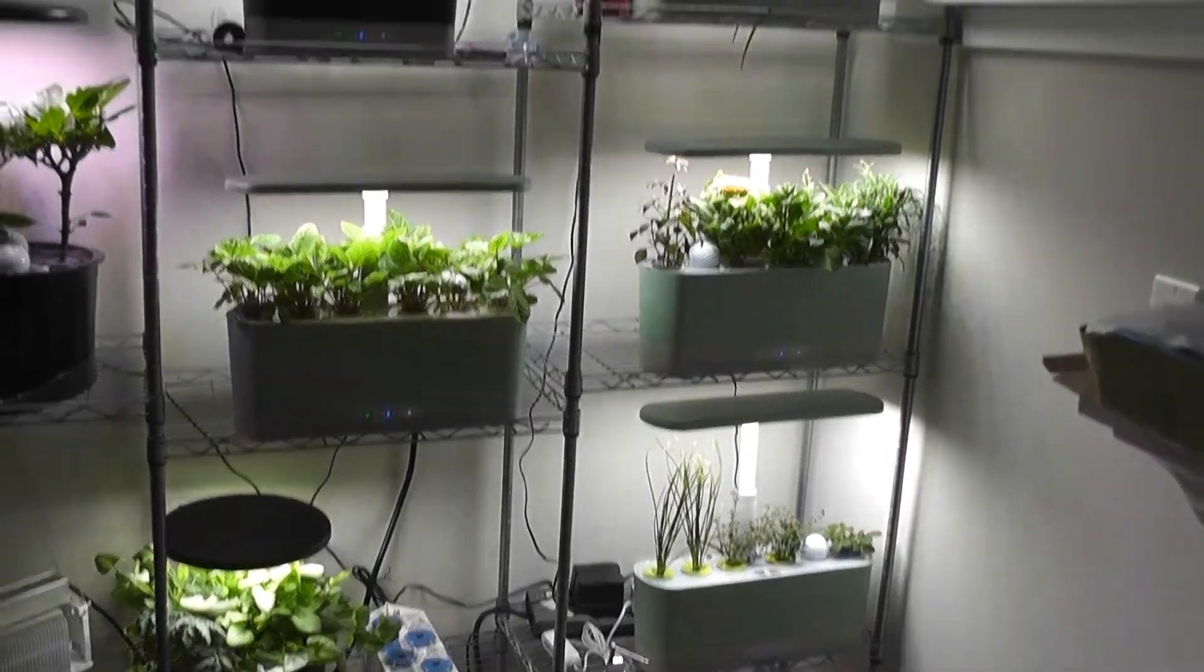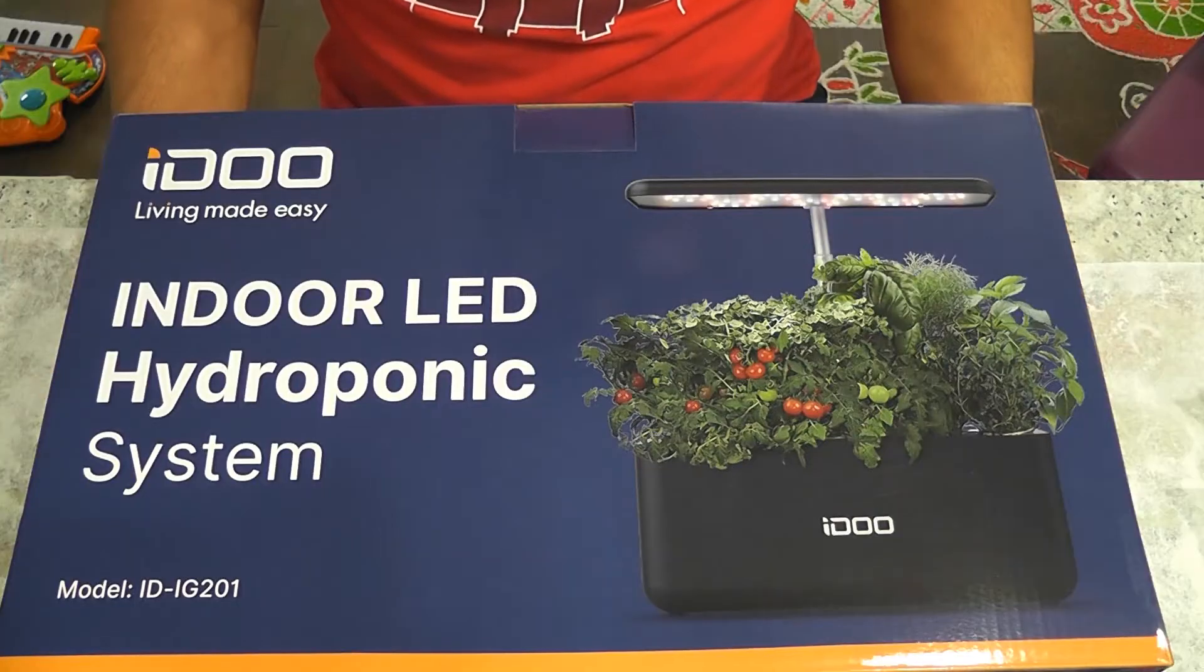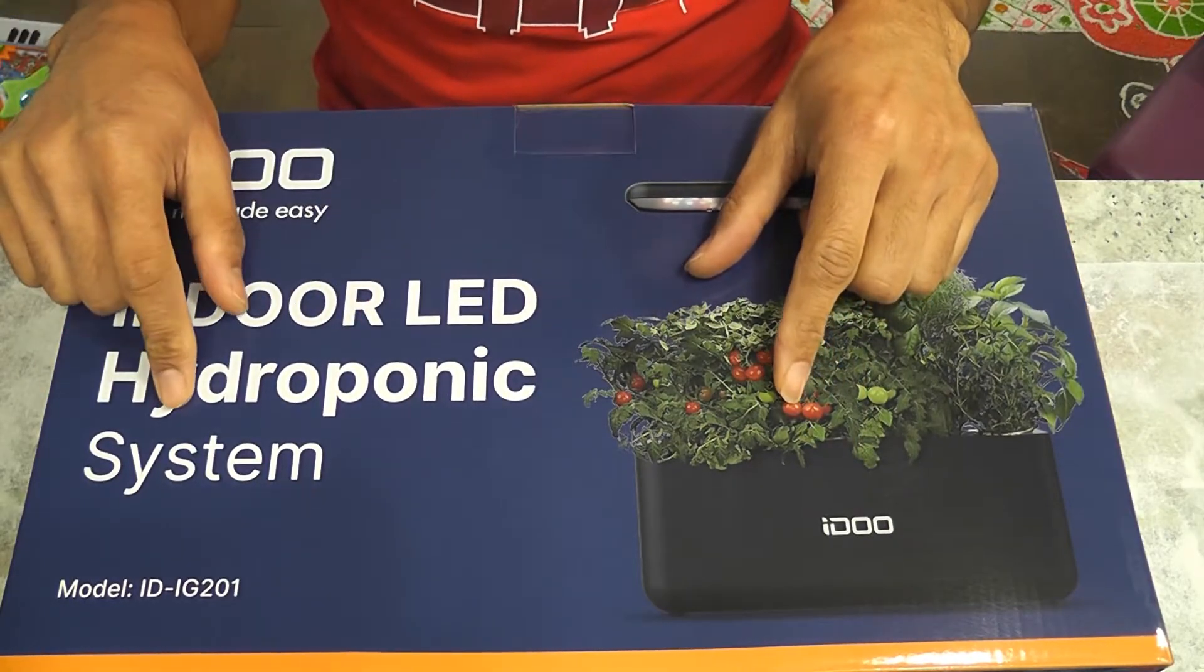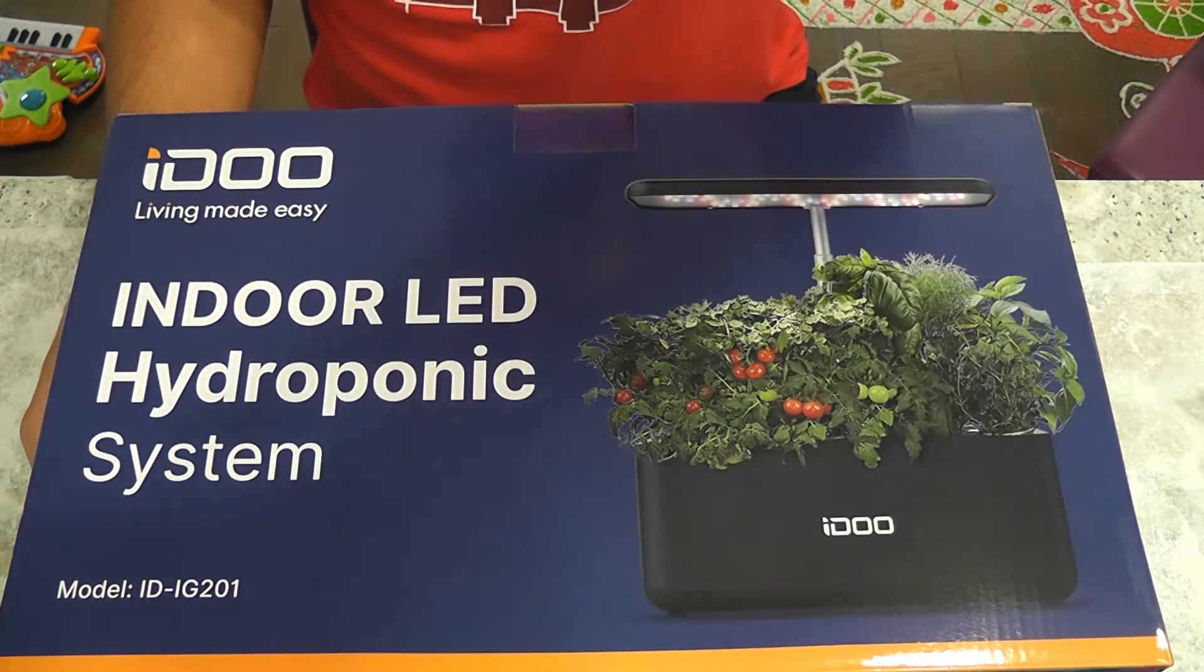After owning 12 AeroGardens from different models, I wanted to try something different. I found this iDo hydroponic system on Amazon with good ratings and decent price. Let's unbox this and see what it has and how it works.